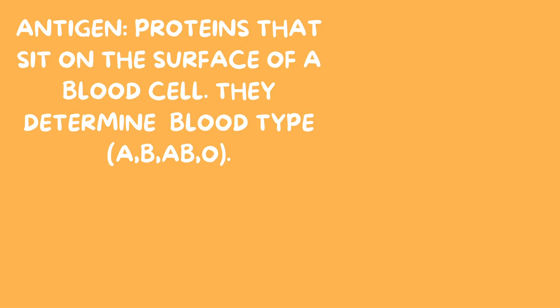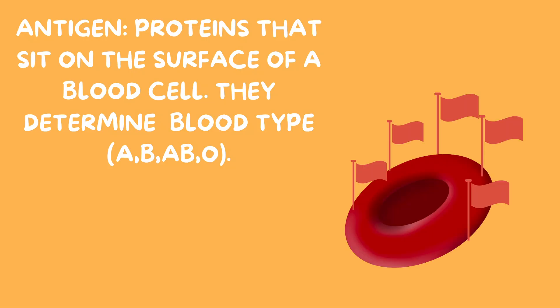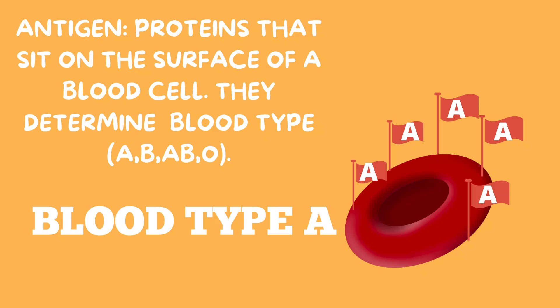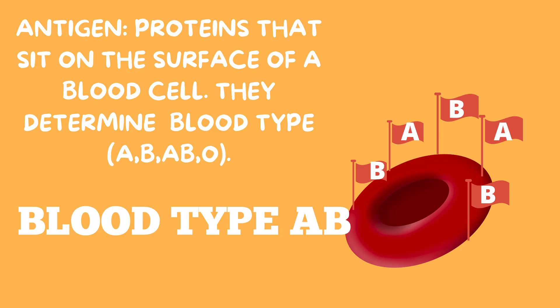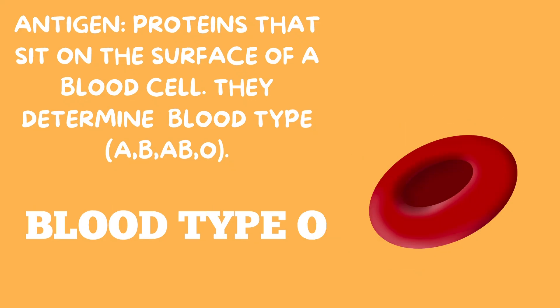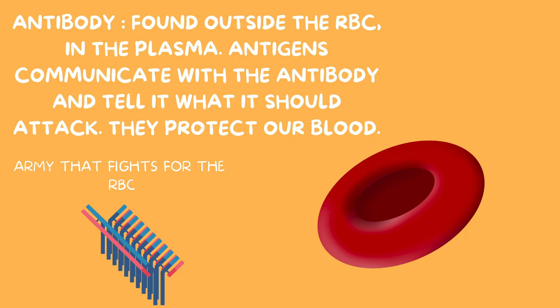I'm going to represent antigens with flags because antigens are basically what the blood is representing. So if we have a blood cell with an antigen with an A on it, then this is type A blood. If we have a red blood cell with a B antigen, then this is blood type B. If we have both A and B antigens, then this is blood type AB. If we have no antigens — like zero antigens — then this is referred to as blood type O.